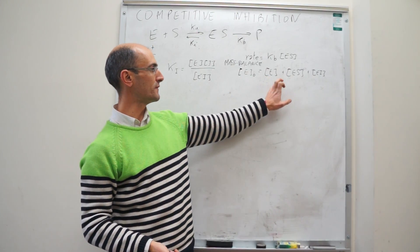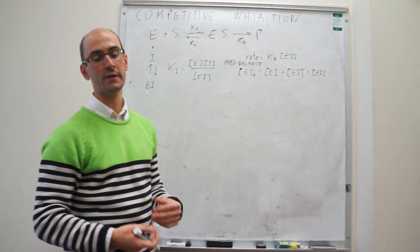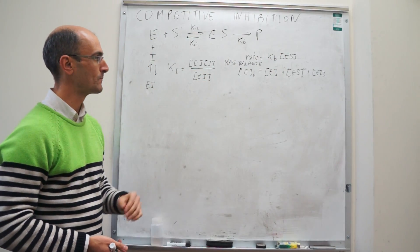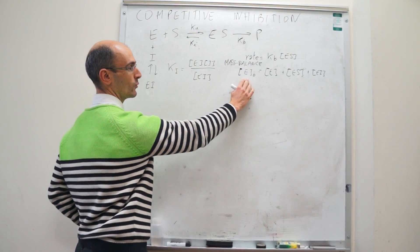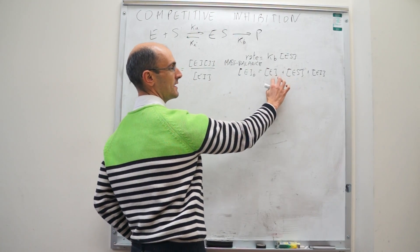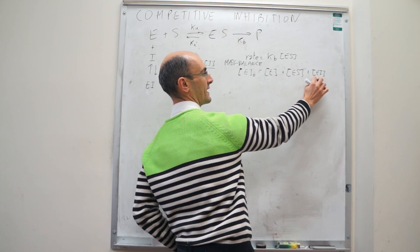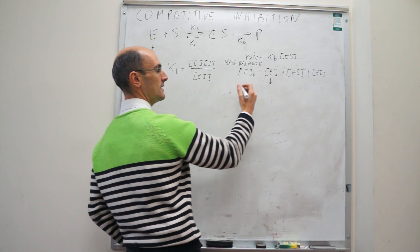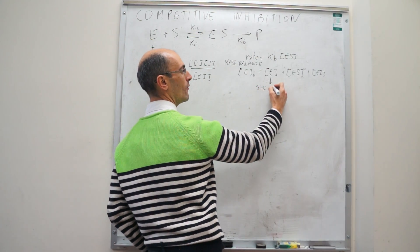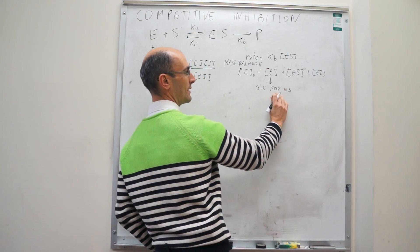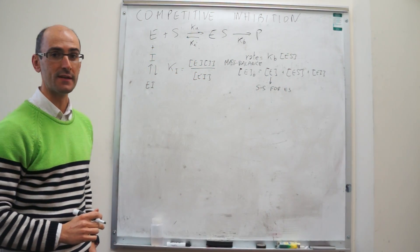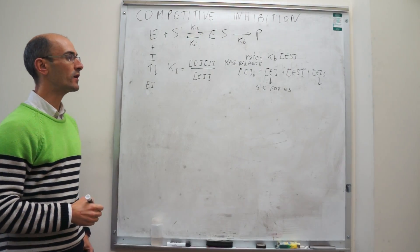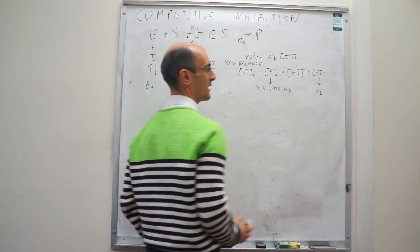We need to express [E] and [EI] as functions of [ES] so that everything depends on [ES] and we can solve for it. The strategy to put [E] as a function of [ES] is to apply the steady-state approximation for ES. From that equation we'll find an expression relating [E] to [ES]. Then to put [EI] as a function of [ES] we'll use our K_I expression.